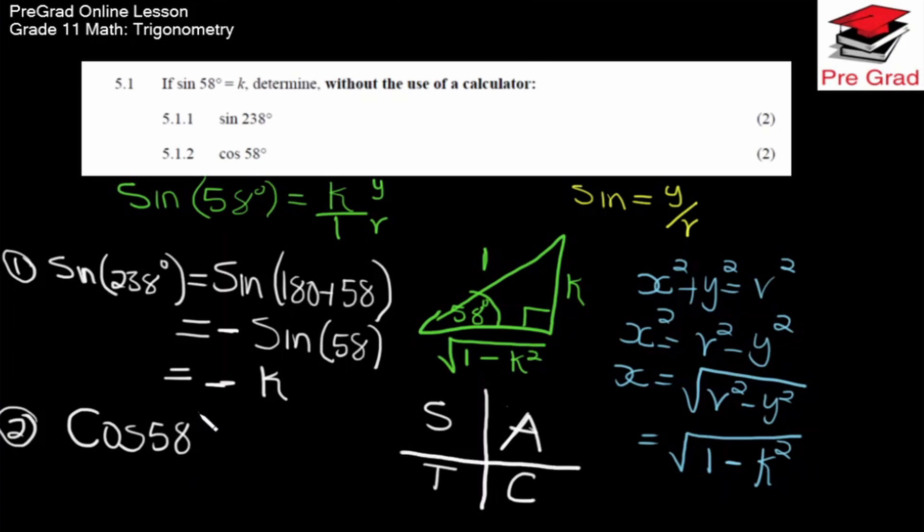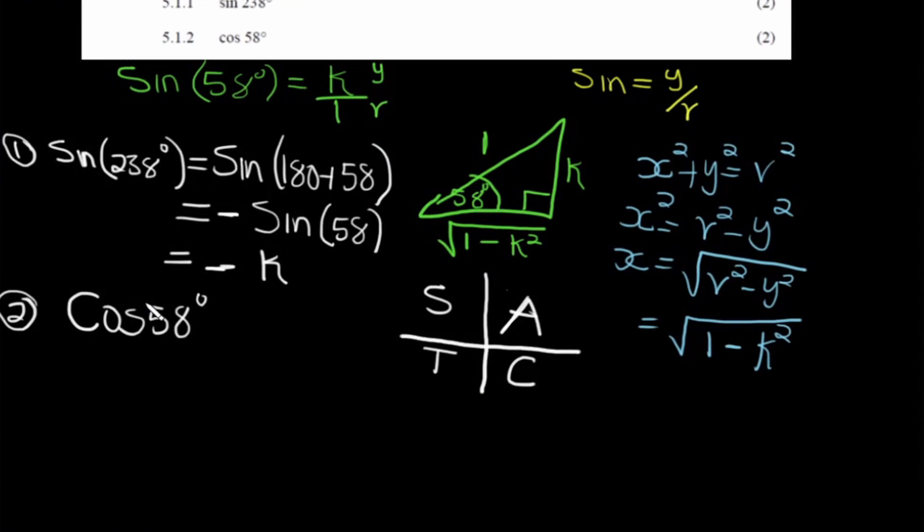Right? So cosine 58 degrees. If we want to find cosine 58 degrees, we look at our triangle. Cosine is adjacent over hypotenuse. The adjacent side is x, which equals the square root of 1 minus k squared. Okay.